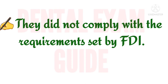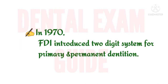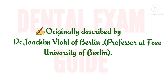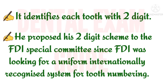In the year 1970, FDI introduced a two-digit system of notation for both the primary and permanent dentition. This two-digit system was originally described by Dr. Jochen Wiel of Berlin, who described each tooth with two digits and proposed his two-digit scheme to the FDI special committee.